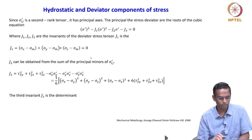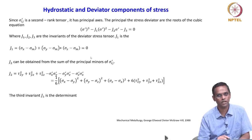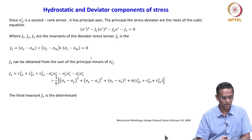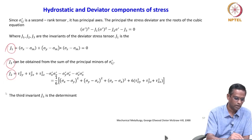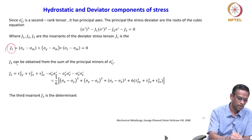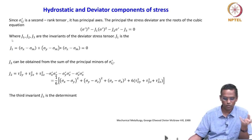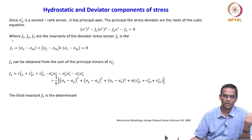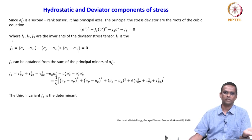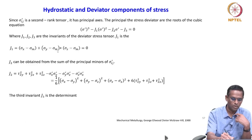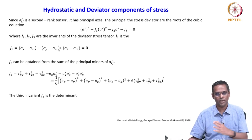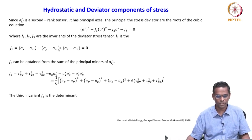I am showing these particular invariants because some of the yielding theories will directly quote this j2 invariant or j1 invariant. If you are not familiar with this, then it is a little confusing. Now that you know j2 is an invariant of the stress deviator matrix, once you remember these three equations and their invariants, it is very easy to appreciate them later on.